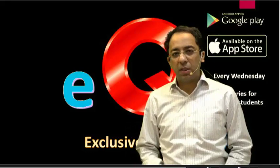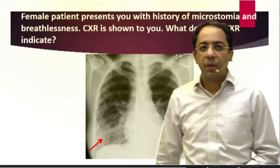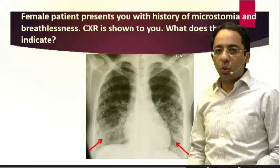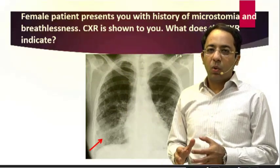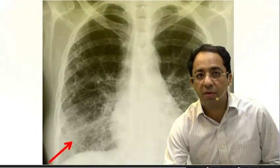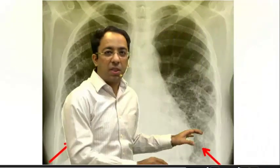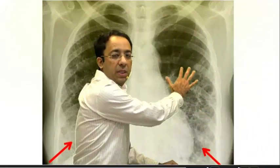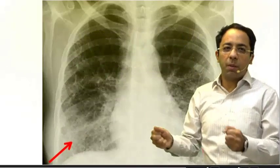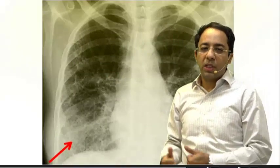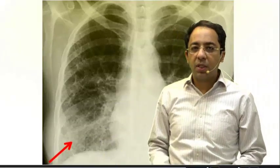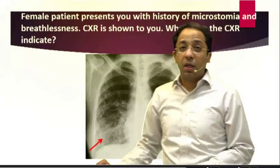In today's EQ series, I have taken a very important question. We have a female patient with a history of microstomia and breathlessness, and a chest X-ray is shown. Let me zoom into the lung findings. In the basal part of the lung, you can see an interstitial pattern — also called reticular pattern or septal thickening — which is the finding of interstitial lung disease.